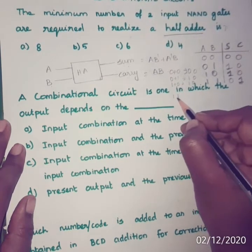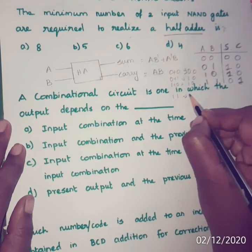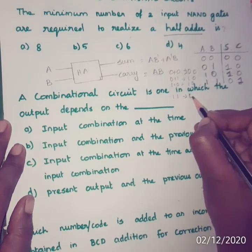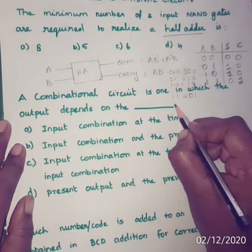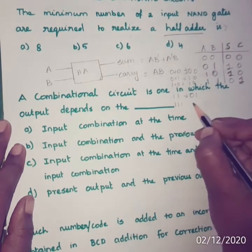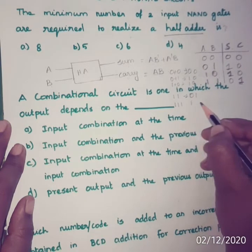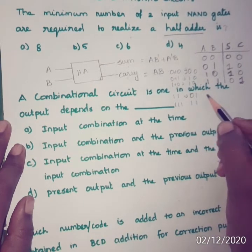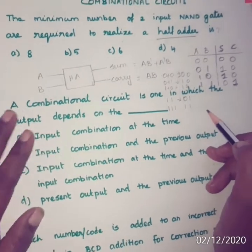For 1 plus 1, it produces sum 0 and carry 1. If we have three 1s, sum is equal to 1 and carry is equal to 1. This is the addition rule.